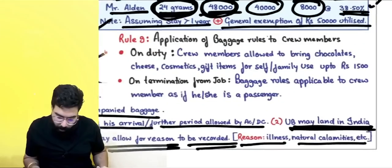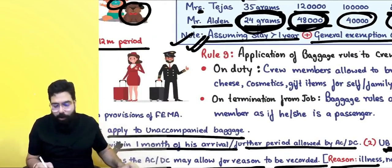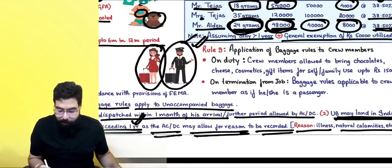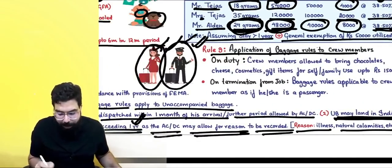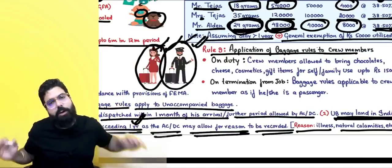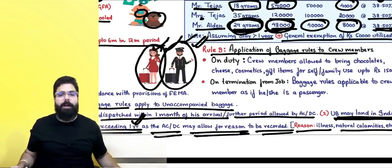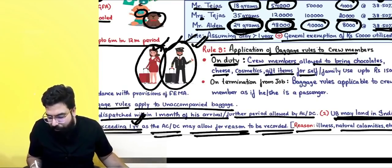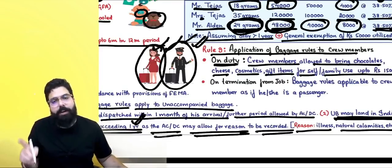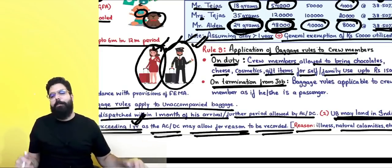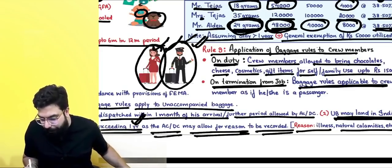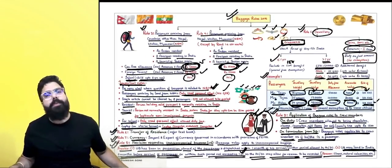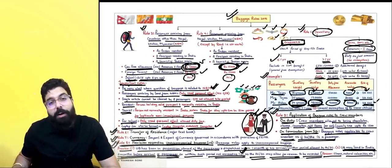Rule 9 deals with crew members coming from outside India. Crew members are not allowed the standard ₹50,000 or ₹15,000 GFA on every trip. On duty, crew members are allowed to bring chocolates, cheese, cosmetic items, and gift items for family use up to ₹1,500. On termination of job, the normal baggage rules shall apply to them as if they were a passenger.